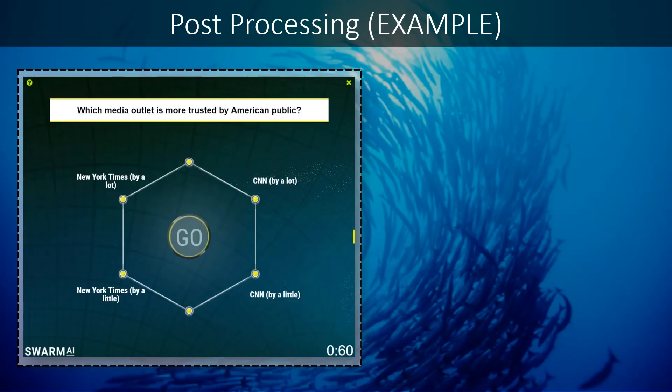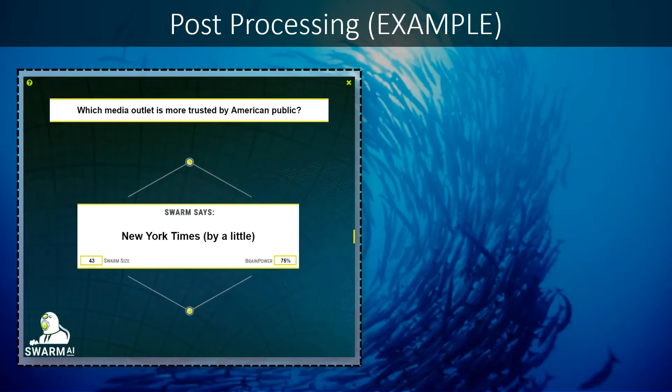For example, which is more trustworthy, the New York Times or CNN? Here you can see the system converging with AI processing on the New York Times by a little.